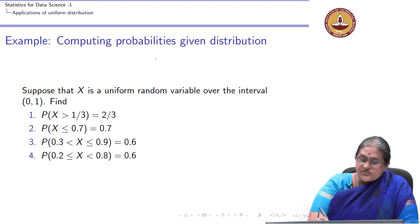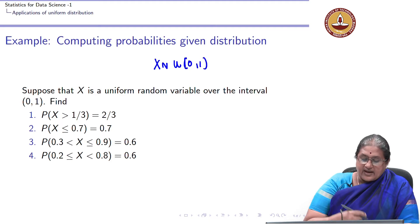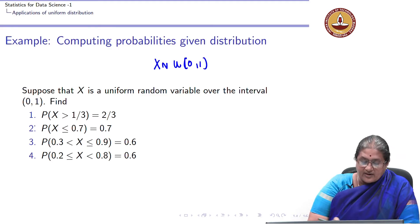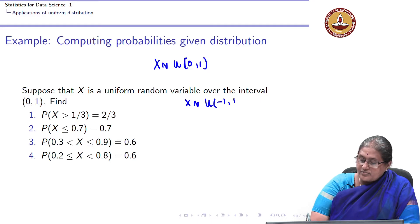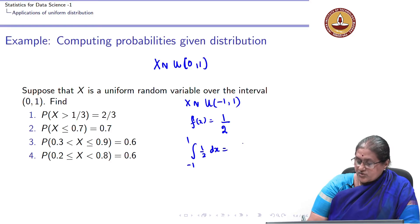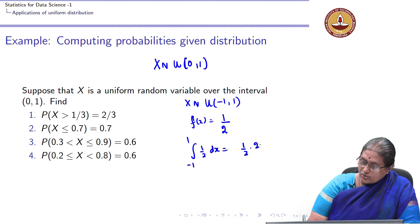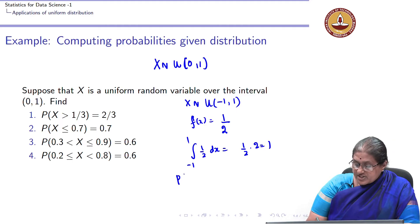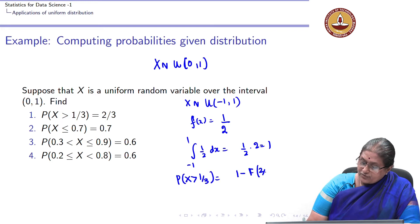This was when X is uniform between 0 and 1. We can do the same exercise if X is uniform between -1 and 1. Here f(x) = 1/2, and we can verify that the integral from -1 to 1 of f(x)dx = 1/2 × 2 = 1. Probability X greater than 1/3 is 1 minus F(1/3).